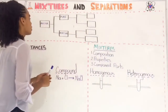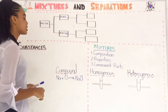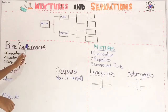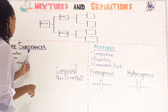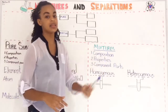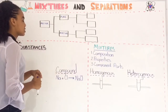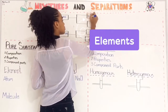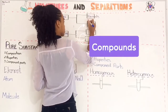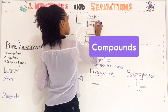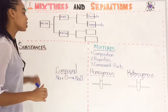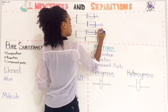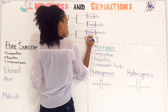So what we're going to do today, we're going to look at the different types of pure substances, the different types of mixtures, and then we look at the compositional properties and component parts of the pure substances and the mixtures. The two types of pure substances that we have are elements and compounds, and the two types of mixtures are homogeneous and heterogeneous.